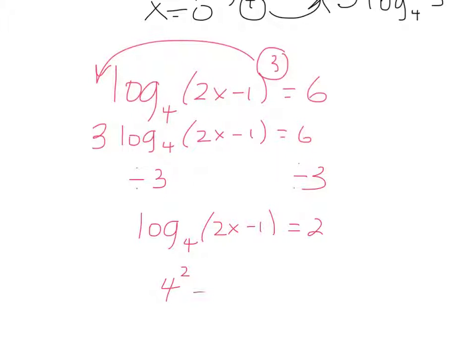And you would get log base 4 of 2x minus 1 is equal to 2. In other words, 4 to the second, switching forms, 4 to the second is equal to 2x minus 1. And 4 to the second is 4 times 4, so it's 16 equals 2x minus 1. So you end up getting, add one, 17 equals 2x. So 17 over 2 is equal to x.